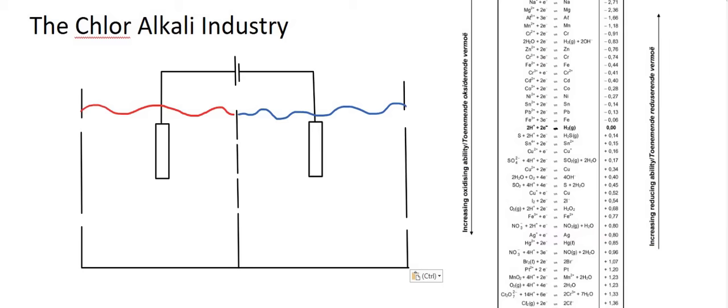In this lesson, we are going to talk about the chloralkali industry. The chloralkali industry is a real-life process that helps us to produce some important chemicals. Those three chemicals are chlorine, hydrogen, and sodium hydroxide. At the end of the lesson, I'll mention why we need those. But for now, we're going to try and see how we can make those.